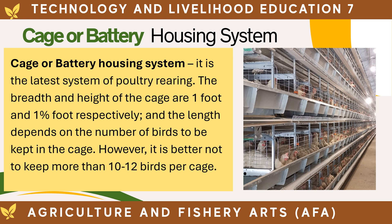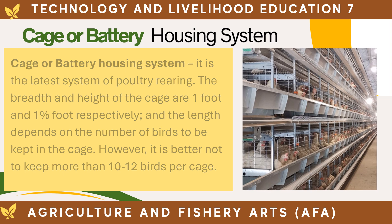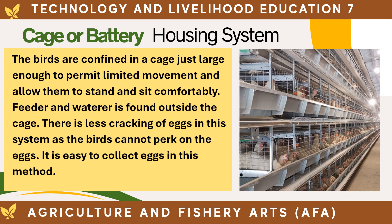The cage or battery housing system is the latest system of poultry rearing. The breadth and height of the cage are one foot and one and a half feet respectively, and the length depends on the number of birds kept. It is better not to keep more than 10 to 12 birds per cage. The birds are confined in a cage just large enough to permit limited movement and allow them to stand and sit comfortably. Feeder and waterer are found outside the cage, and there is less cracking of eggs as birds cannot peck on them. Egg collection is also easy in this method.